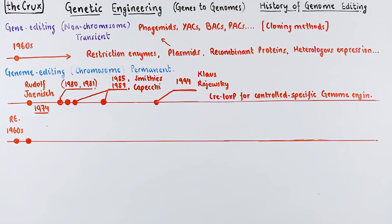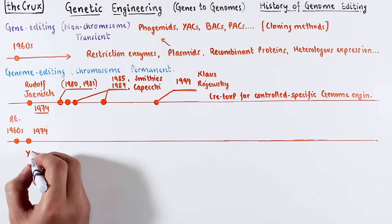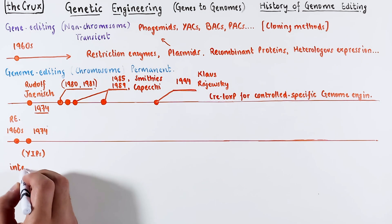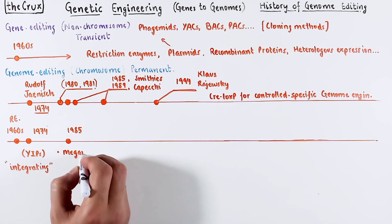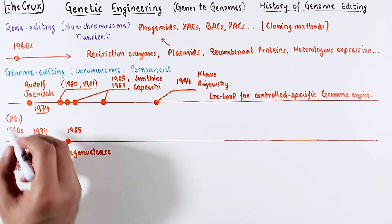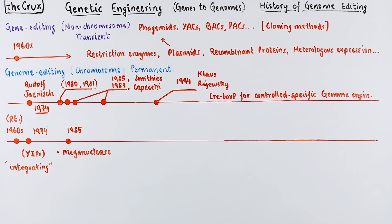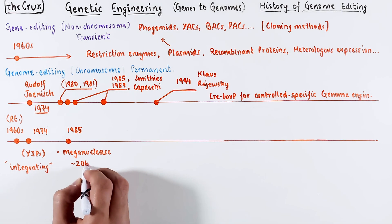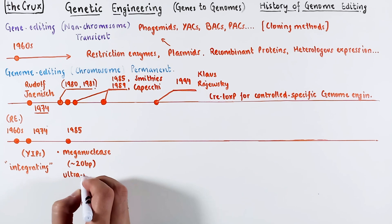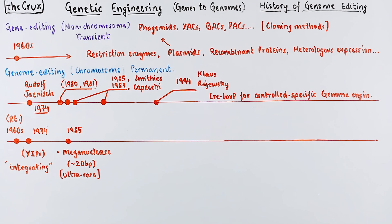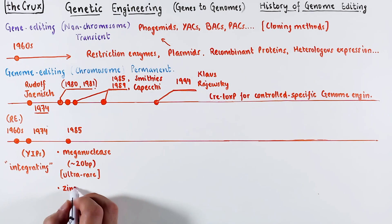This goes back to the 1960s, to the discovery of restriction enzymes and the development of yeast-integrating plasmids. Integrating plasmids integrate, so technically it is a genome manipulation. For genome editing, a big thing was the discovery of meganucleases in 1985. Think of these nucleases as restriction enzymes with a much larger — oftentimes greater than 20 bases — recognition and cleavage site. These sites are therefore ultra-rare, making such enzymes good for genome editing.